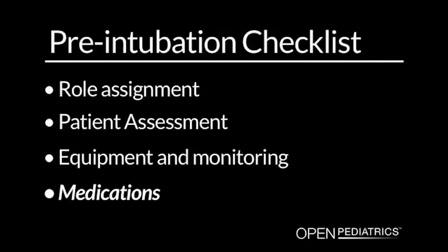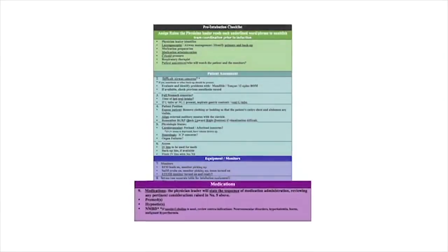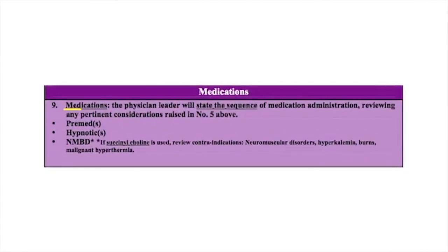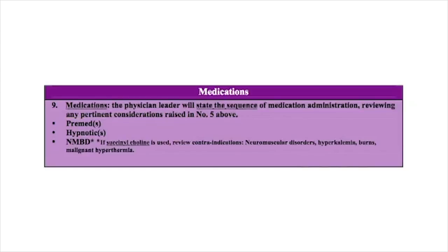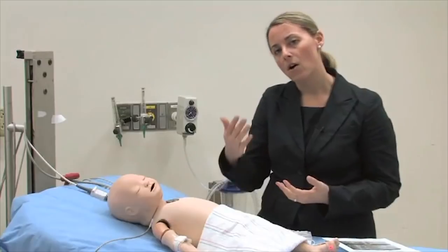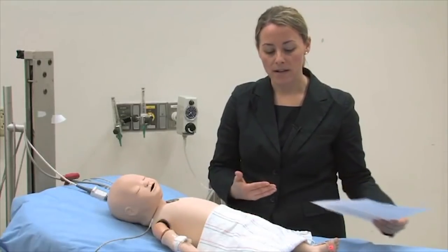Medications. The last step is medications. The physician leader will state in which order the medications will be administered and describe again any pertinent considerations, including cardiovascular, neurological, or organ failure considerations that need to be addressed. Typically, the pre-medication is given first, followed by a hypnotic and a neuromuscular blocking agent. Once you've addressed all of these items on your pre-intubation checklist, you can proceed with performing the procedure.